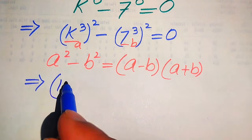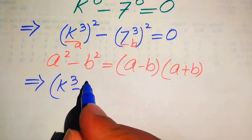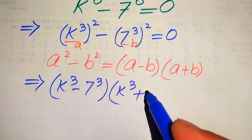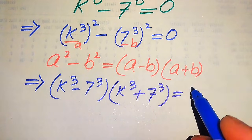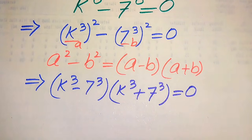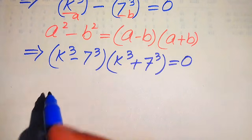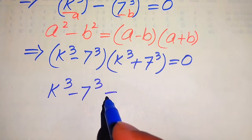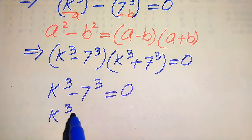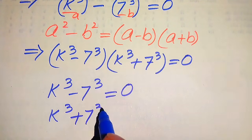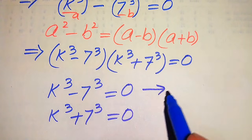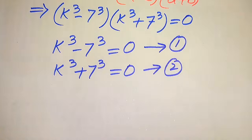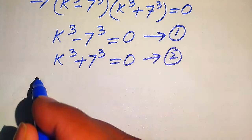Here the base of the first term is our a and the base of the second term is our b. After applying this formula, our equation is written as: a minus b, where a is k cubed and b is 7 cubed, times a plus b, where a is k cubed and b is 7 cubed, equals 0. Now we divide this into two cases.